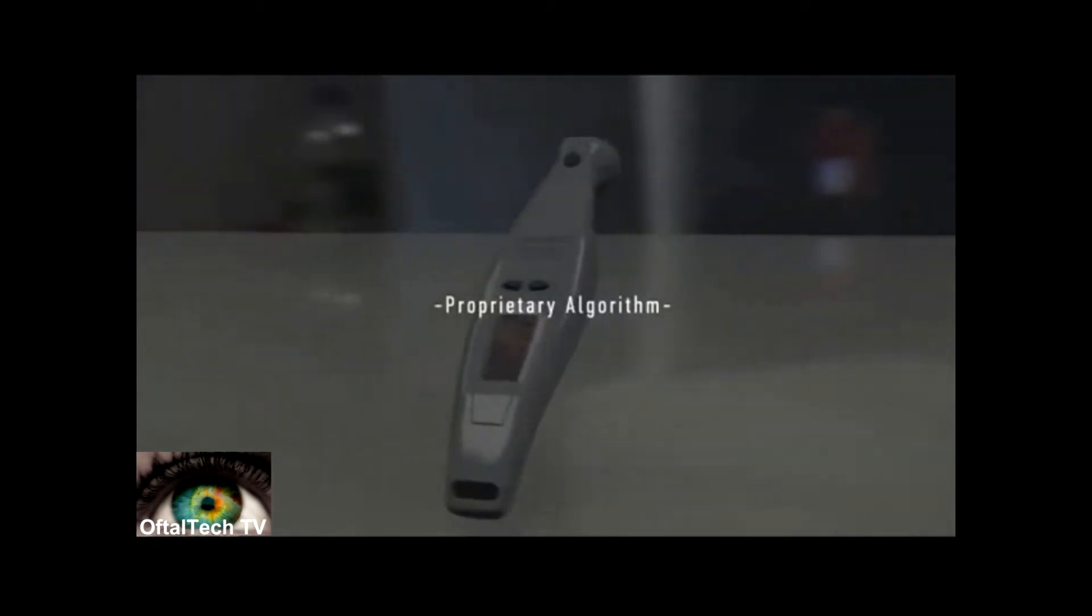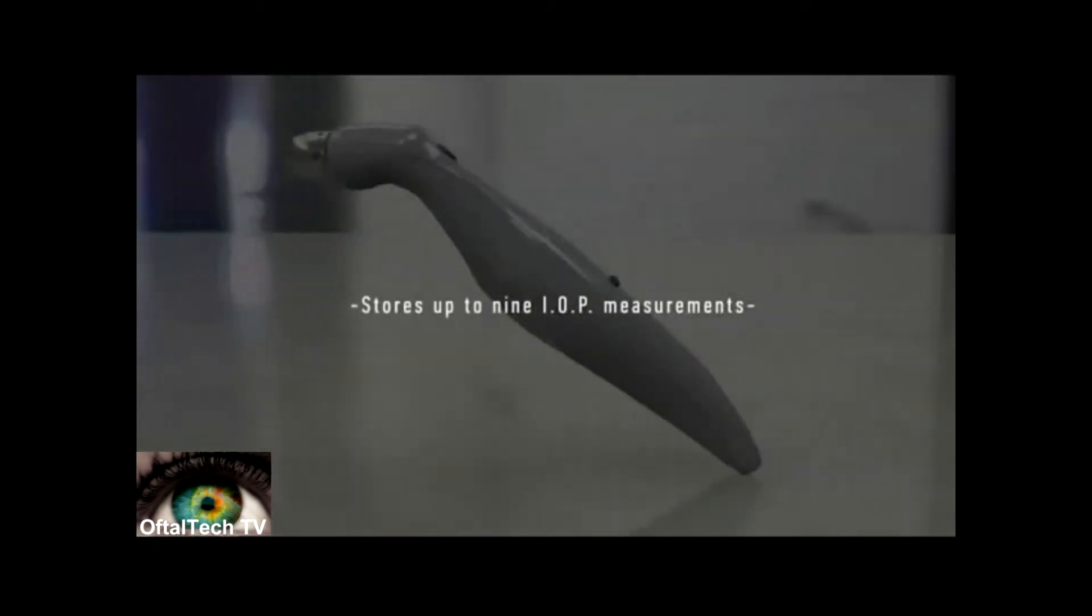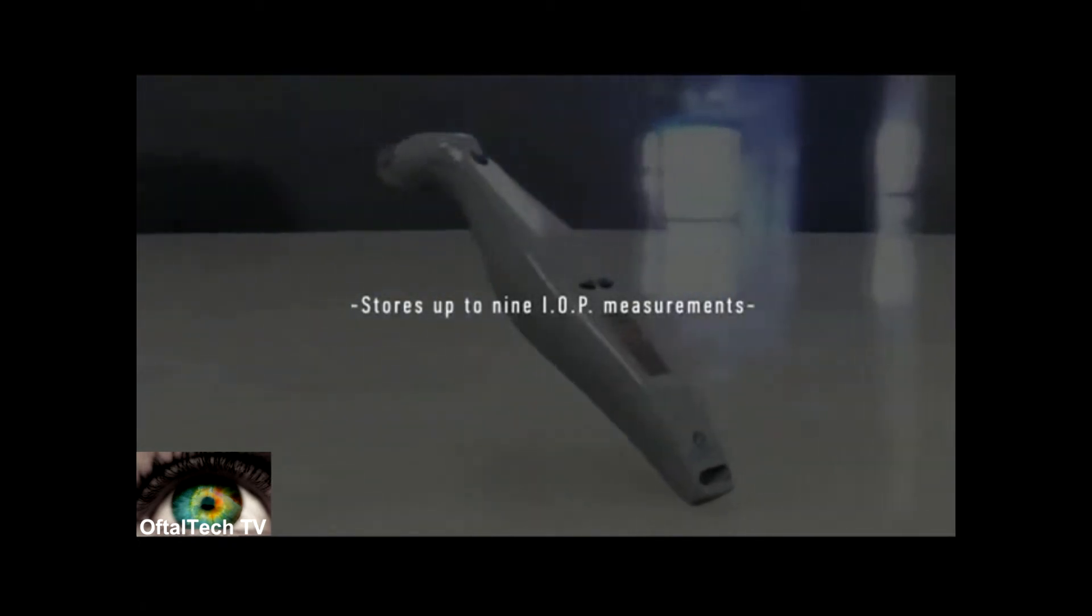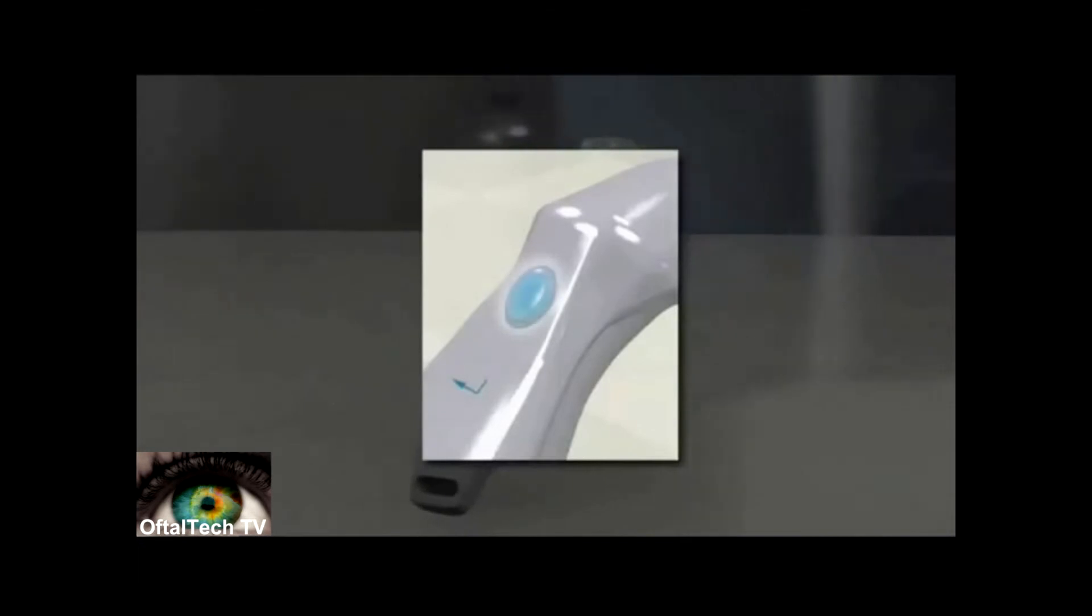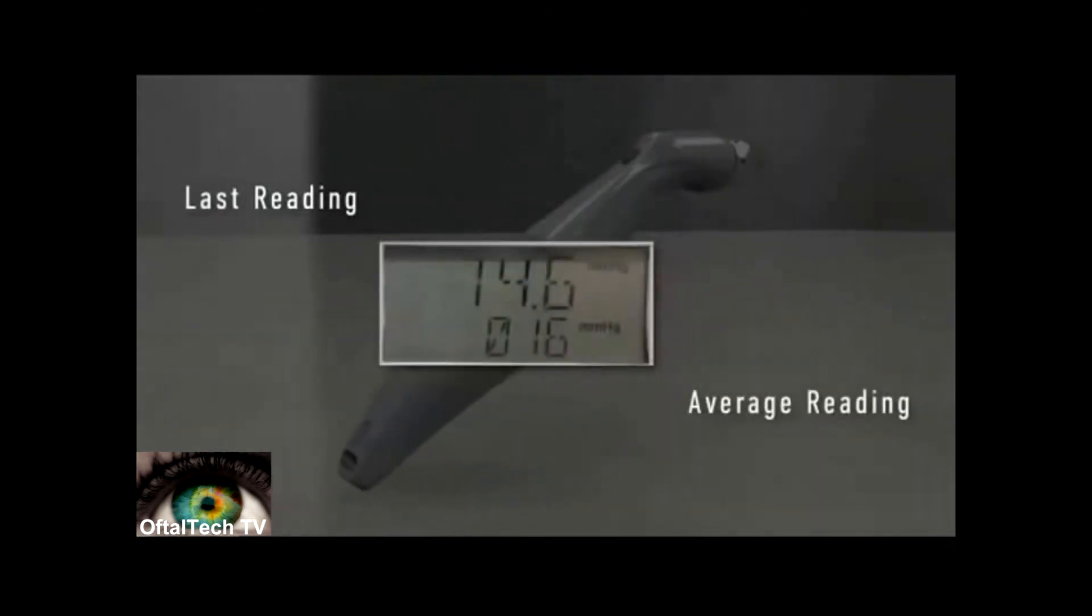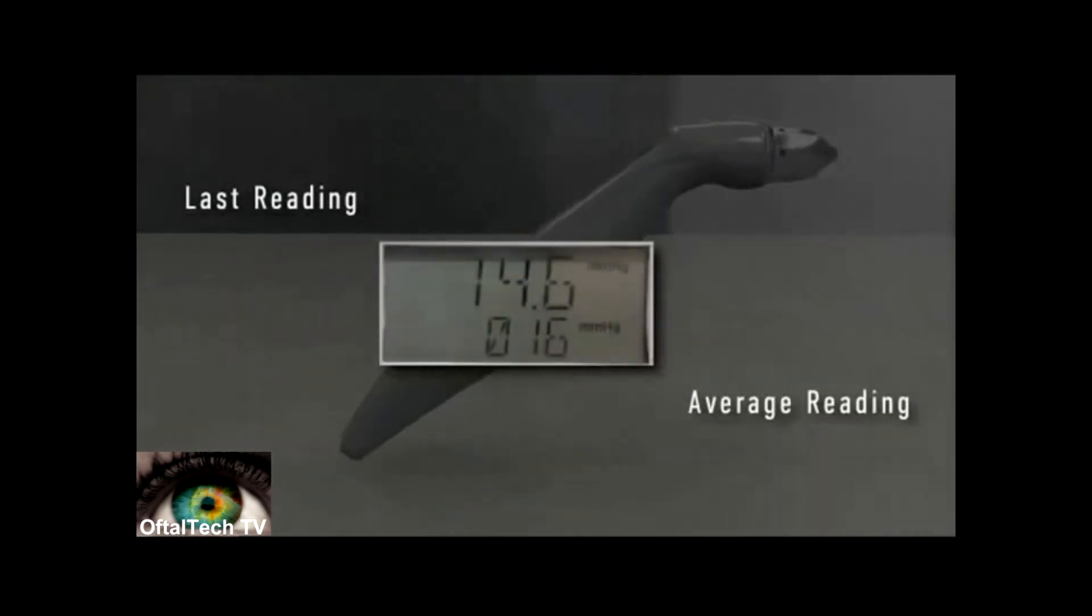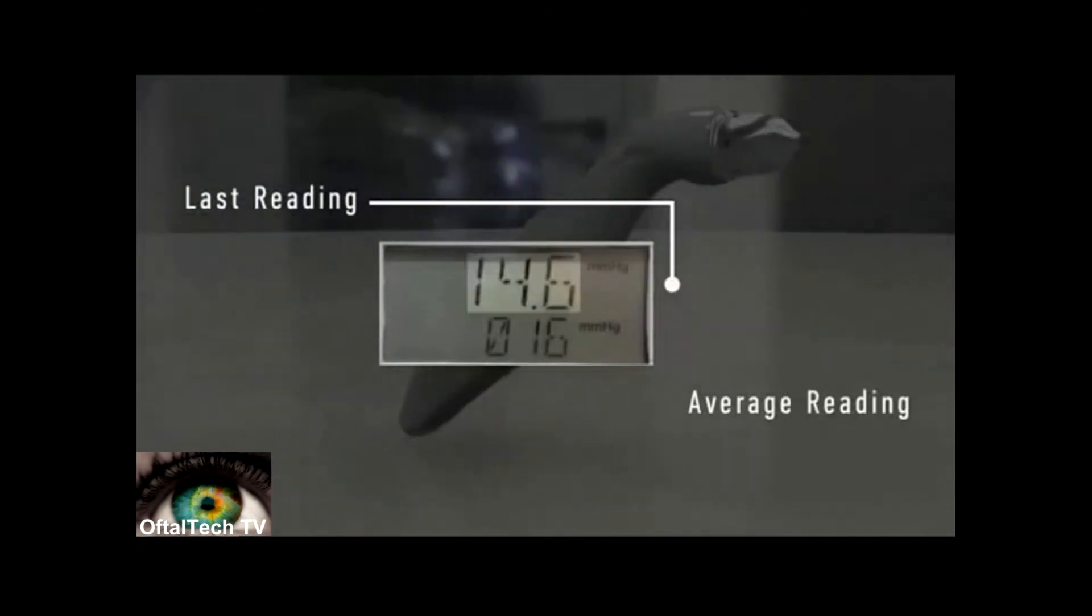The AccuPen has the ability to store nine IOP measurements. Once you have completed a measurement, you can simply press the action button to take another measurement if necessary. The top number on your liquid crystal display will indicate the actual IOP measurement. The number below indicates the average measurement.